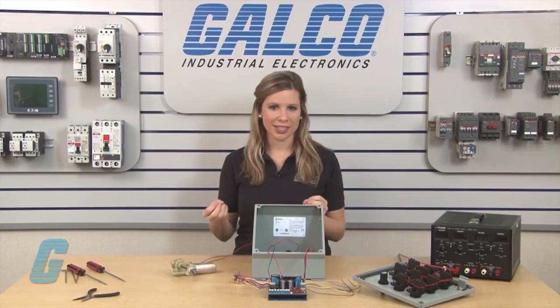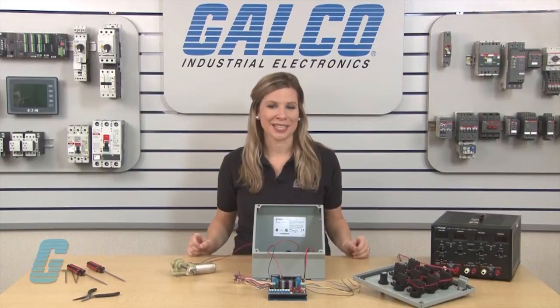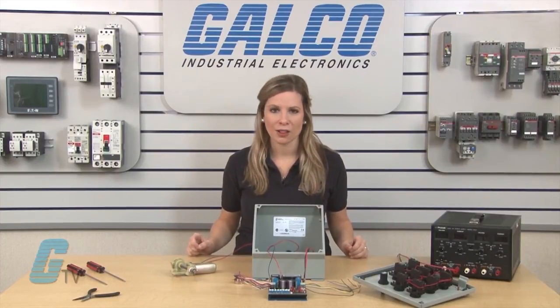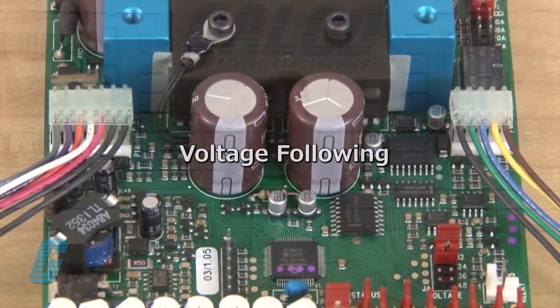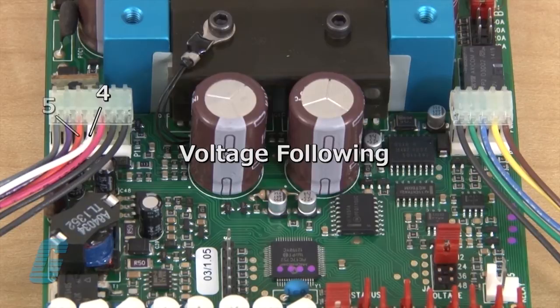I will next wire in a speed reference using a speed pot or a signal input voltage. The jumper on J1 can select either a speed pot or voltage following. For voltage following, I will wire up the left side connections here with number 4 to a negative input and number 5 to the positive side of an isolated DC power source.